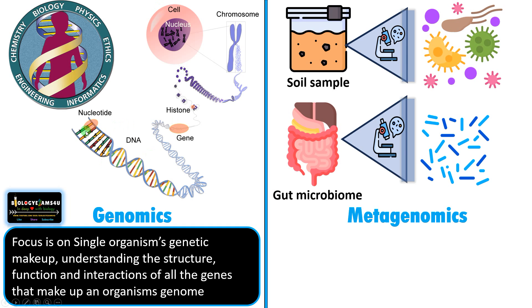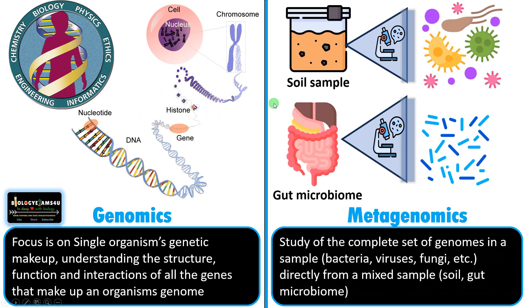Genomics focuses on a single organism's genetic makeup, understanding the structure, function, and interactions of all the genes that make up the genome — as in the Human Genome Project. Metagenomics involves the study of the complete set of genomes in a sample, including bacteria, viruses, fungi, and protozoa, directly from a mixed sample like soil or a gut microbiome.